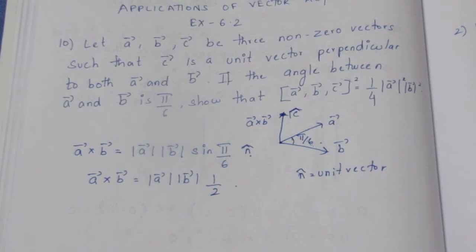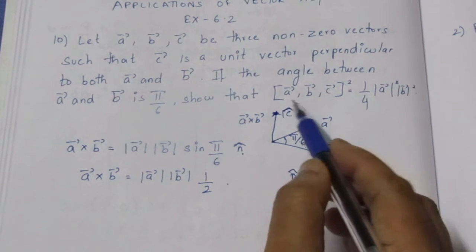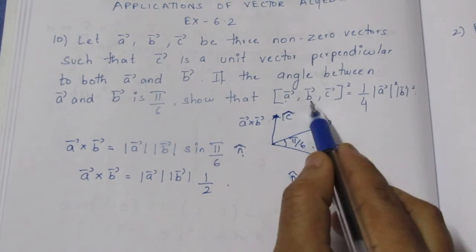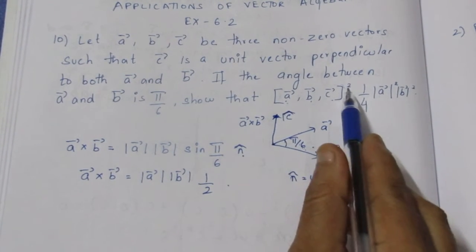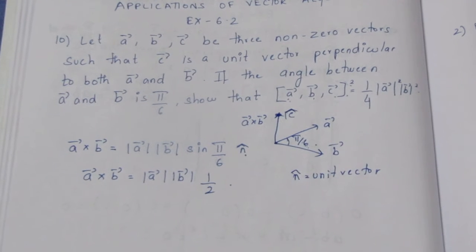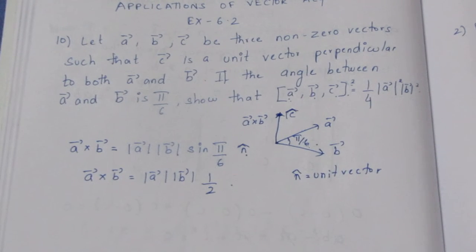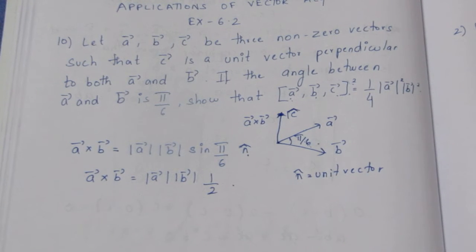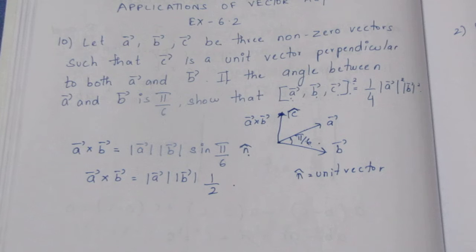So we have to know this value, and we have to show it. Now, we have to show that a vector, b vector, c vector box product whole square equals the required result. The box product is equal to the scalar triple product.